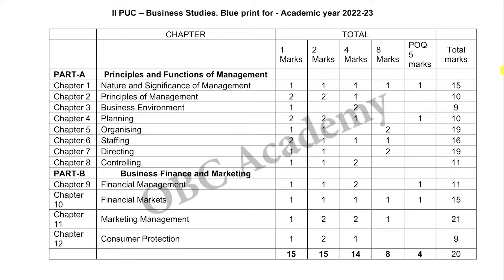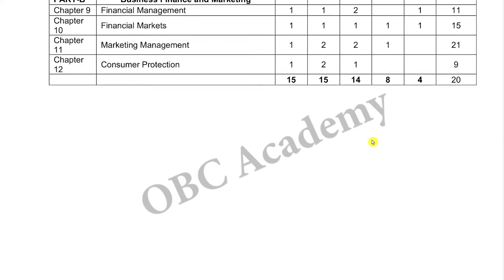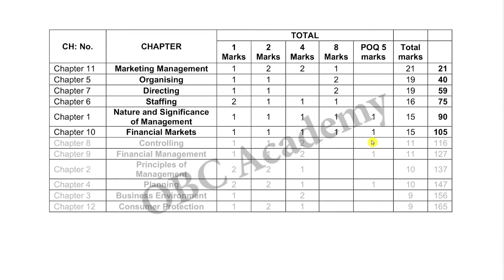I have already published this in our channel. Part A is your management functions, and you have to cover finance and marketing. This is the edited or cut blueprint showing the total marks distribution.